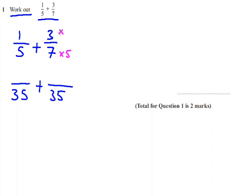So to get the denominator to 35, we times the 7 by 5. So whatever we do to the bottom, we have to do to the top to keep it the same fraction. So 3 times 5 is 15.